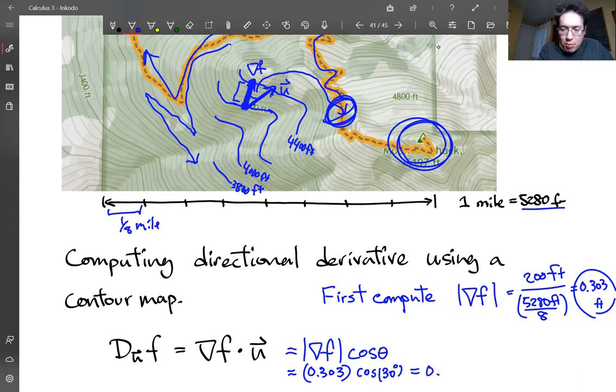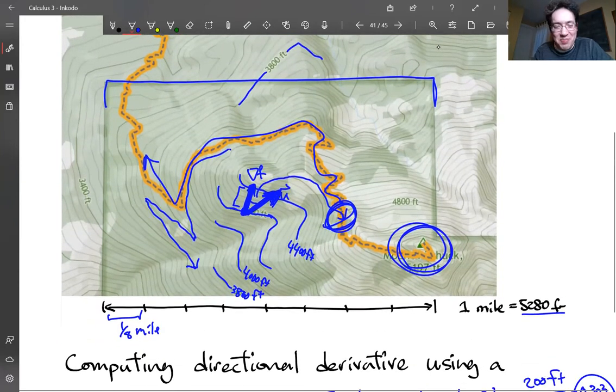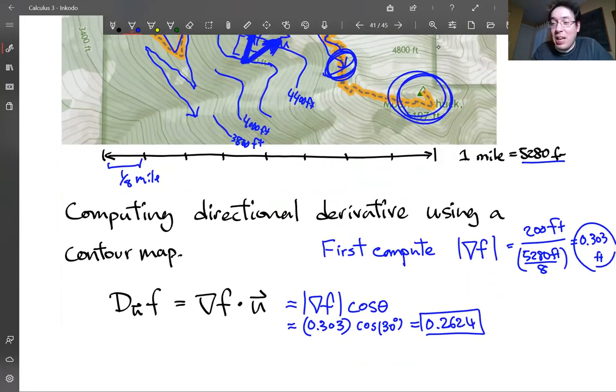is roughly 0.2624. So that is the derivative, or the steepness of the hill, if you're at this point traveling in direction of U. Sorry, this map got really messy. But yeah, you can look at these contour maps and estimate steepness using this method.